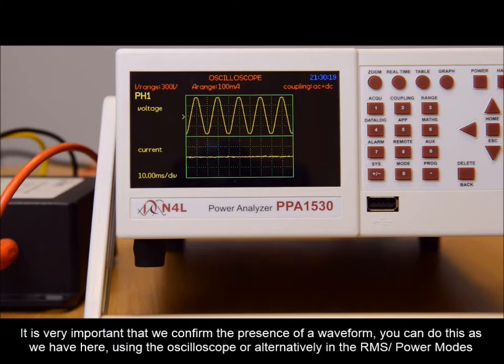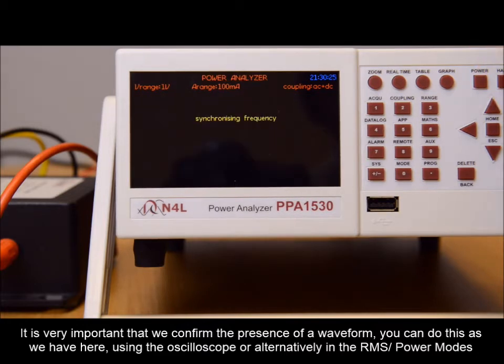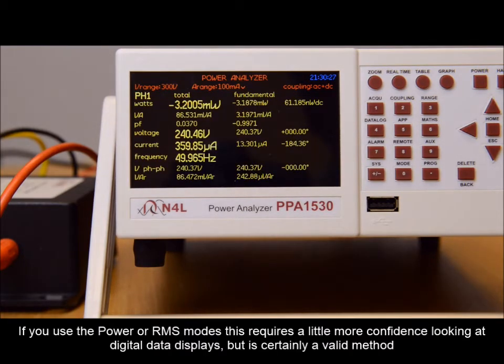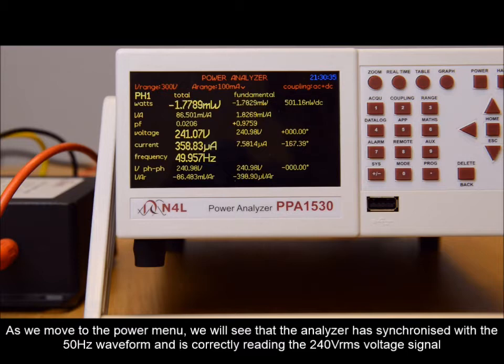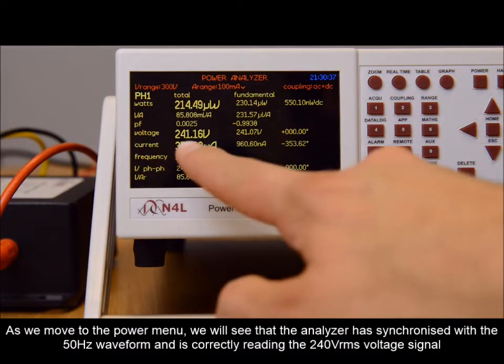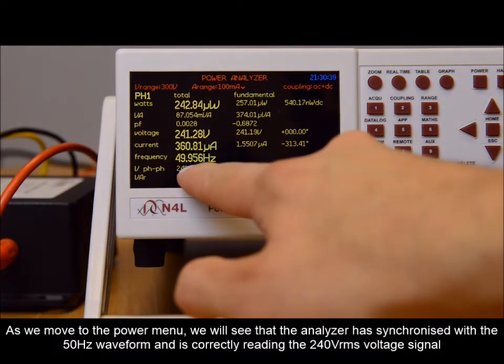It is very important that we confirm the presence of a waveform. You can do this as we have here, using the oscilloscope, or alternatively in the RMS or power modes. If you use the power or RMS modes, this requires a little more confidence looking at digital data displays, but it's certainly a valid method. As we move to the power menu, you will see that the analyzer has synchronized with the 50 Hertz waveform and is correctly reading the 240 volt RMS voltage signal: 50 Hertz, 240 volt RMS.